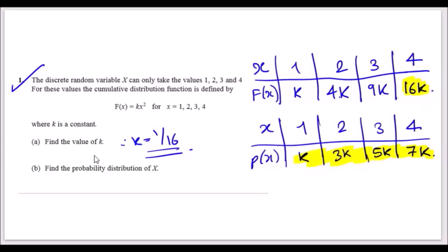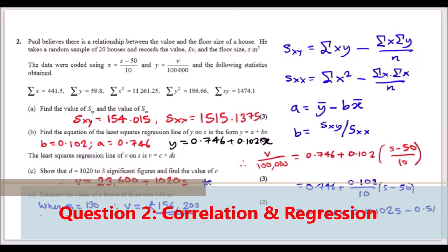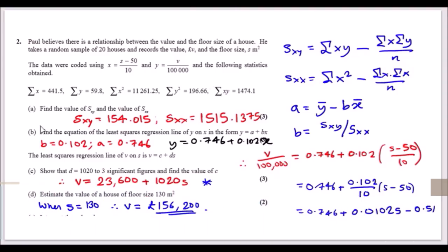Question 2 covers correlation and regression. Paul believes there's a relationship between the value and floor size of a house, taking a random sample of 20 houses. The data are coded using x = (s - 50)/10 and y = v/100,000, and we're given various summary statistics for x and y.